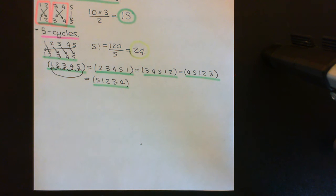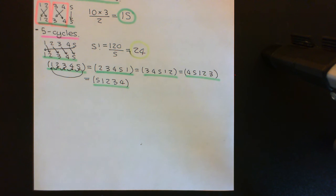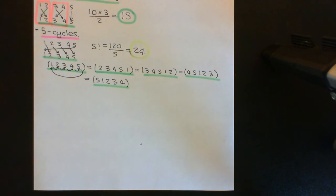Now remember what the definition of a simple group is. A simple group is one that only contains two normal subgroups, namely the trivial subgroup and the improper subgroup. No more interesting subgroup is actually a normal subgroup. It doesn't mean that you can't contain any other subgroups other than the trivial subgroup or the improper subgroup — you can, but they're just not going to be normal subgroups.